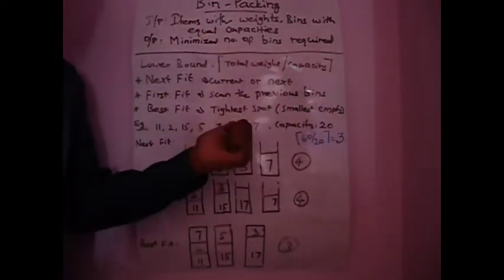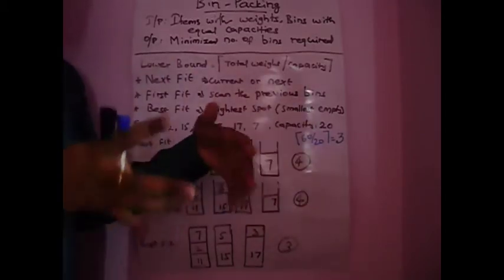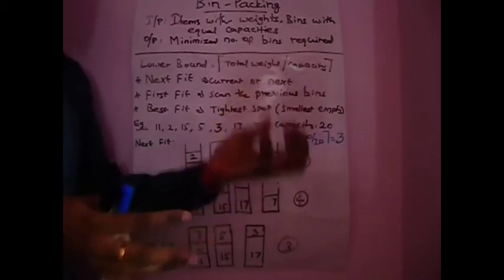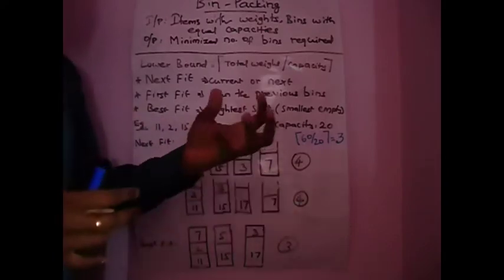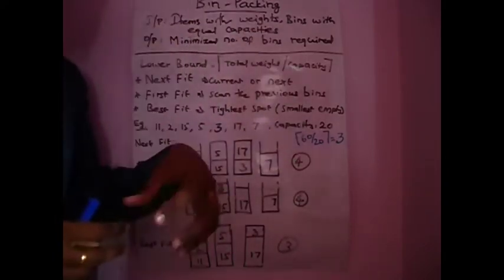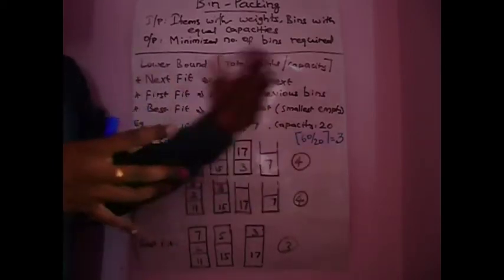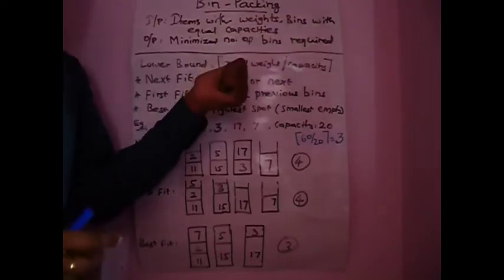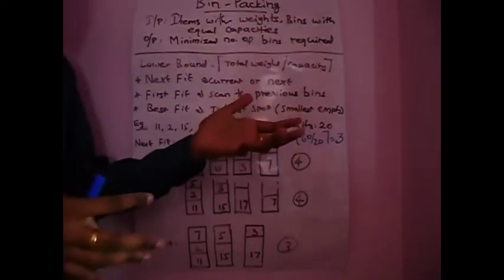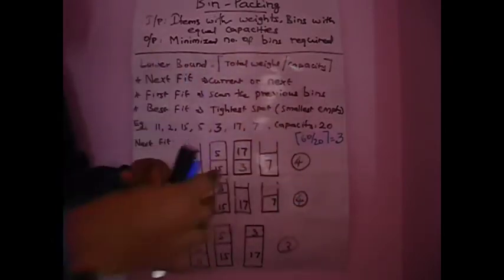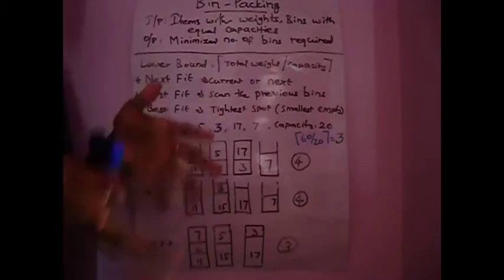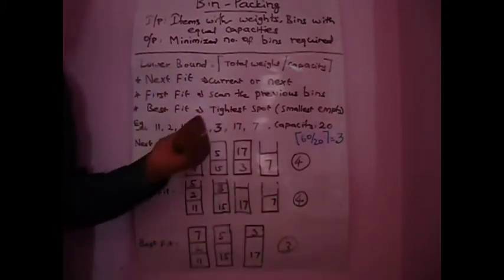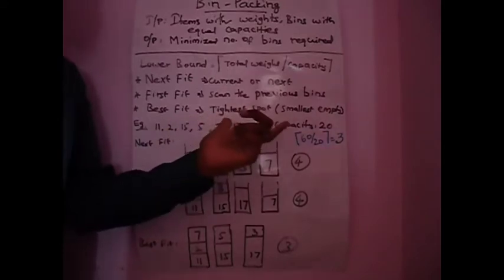First Fit algorithm: we scan all previous bins as well. When a new item comes, we start from the first bin and scan through previous bins to find a suitable place. Only if no existing bin can accommodate the item do we open a new bin. A major assumption is that all items have weights less than the bin capacity, so each item fits in a single bin.